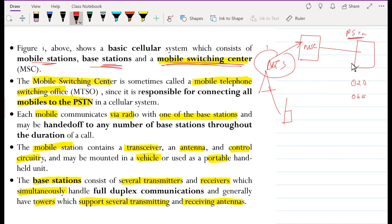Each mobile communicates via radio with one of the base stations and may be handed off to any number of base stations throughout the duration of call. The call may start when we are in this base station A, but then we move to another base station, and then our call is routed from base station A to base station B. Assume someone is driving in a car. When they move from one region to another, the calls are continually being handed off. That is the concept of handover.